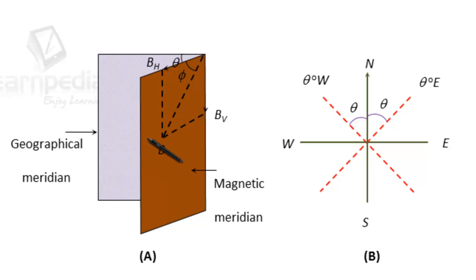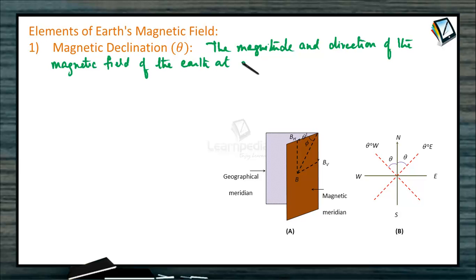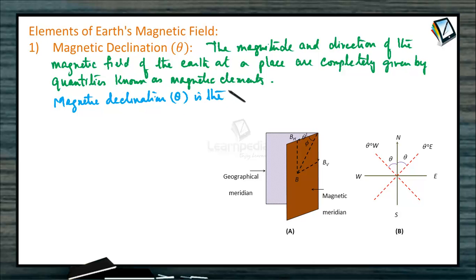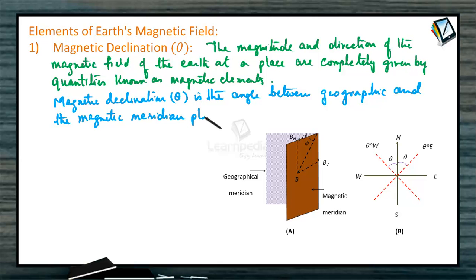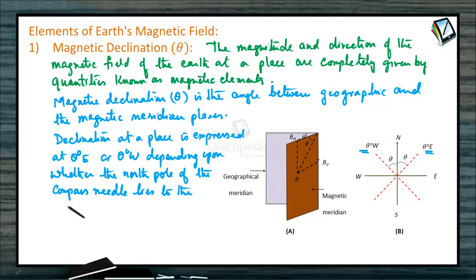Declination at a place is expressed as theta degree east or theta degree west, depending upon whether the north pole of the compass needle lies to the east or to the west of the geographical axis. The magnitude and direction of the magnetic field of Earth at a place are completely given by quantities known as magnetic elements. The first one is magnetic declination theta — the angle between geographical and magnetic meridian planes.